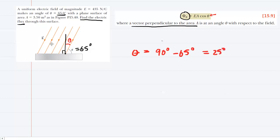That's all there is to it. We now plug into the formula. The electric flux equals the electric field, which is 435 newtons per coulomb, multiplied by the area, 3.5 meters squared, and then multiplied by the cosine of that angle. Make sure your calculator is set to degree mode.